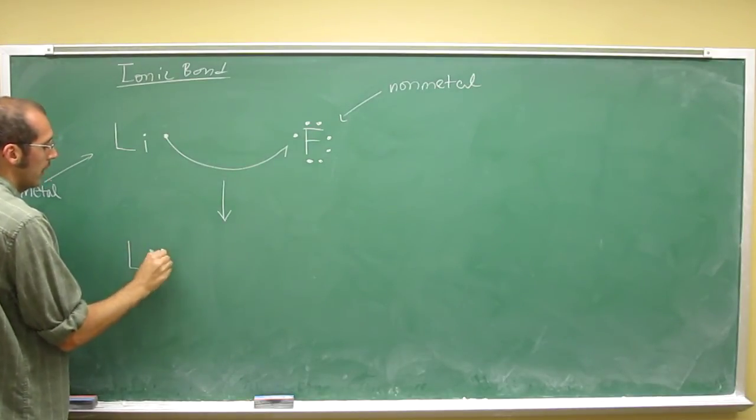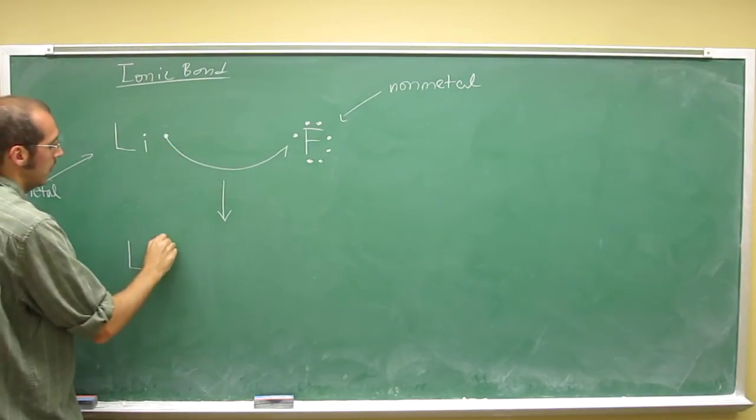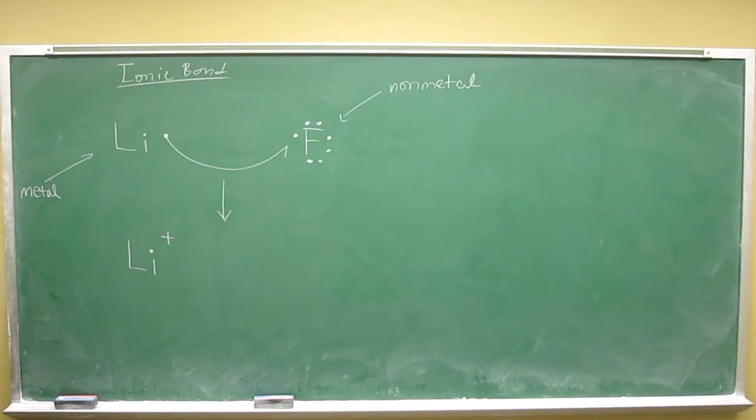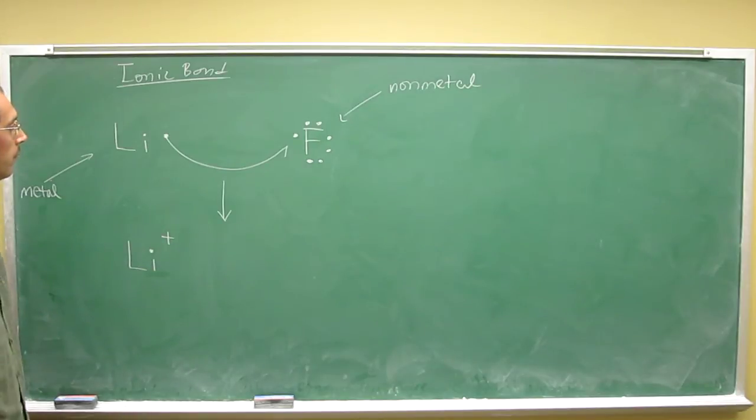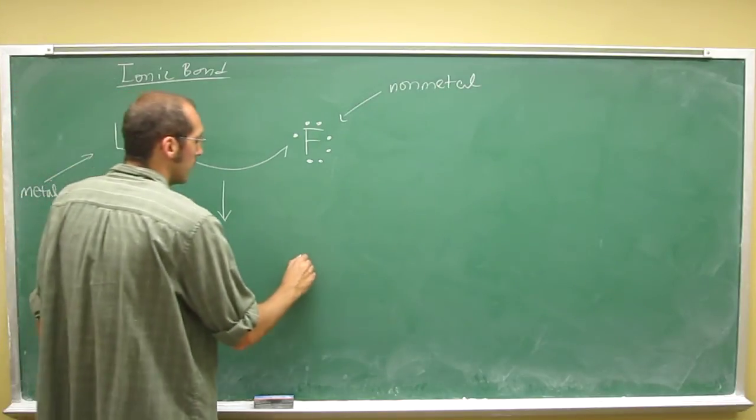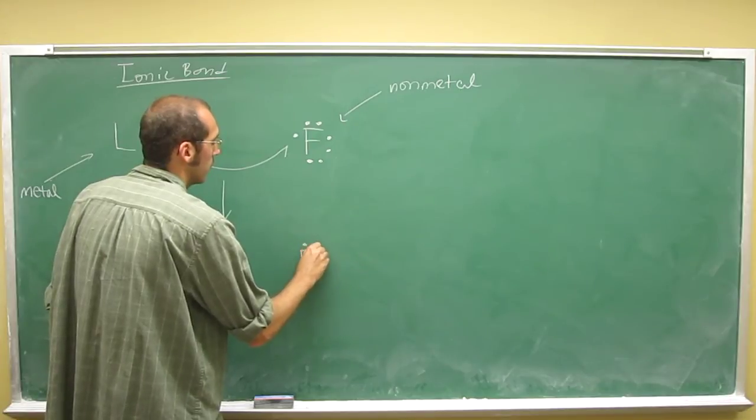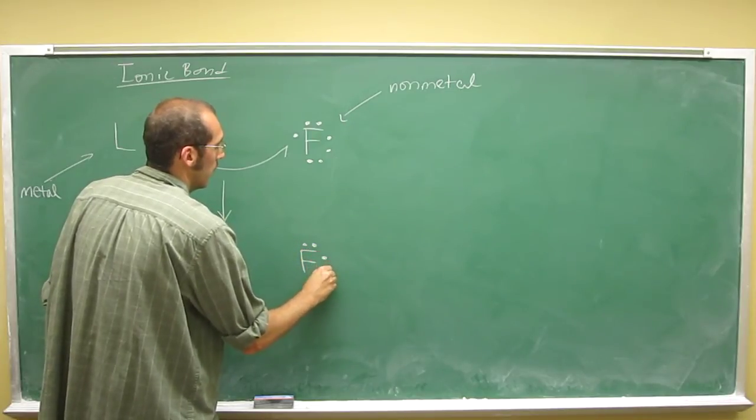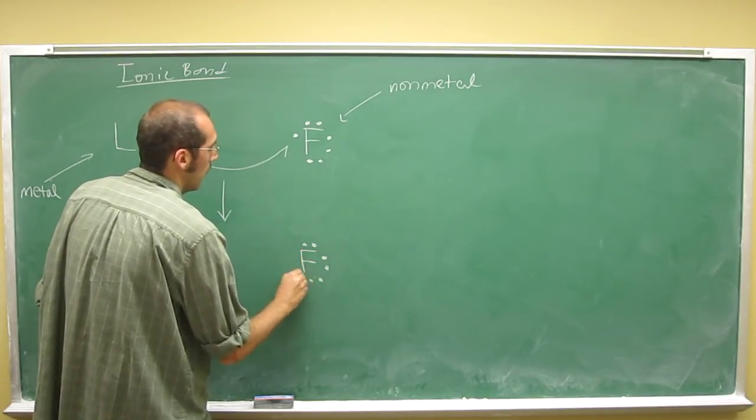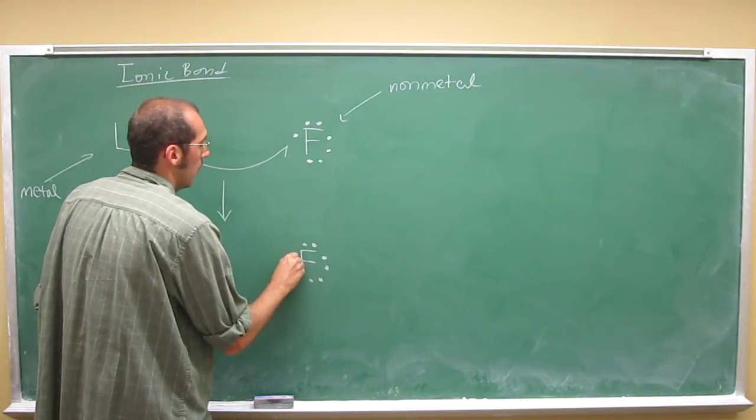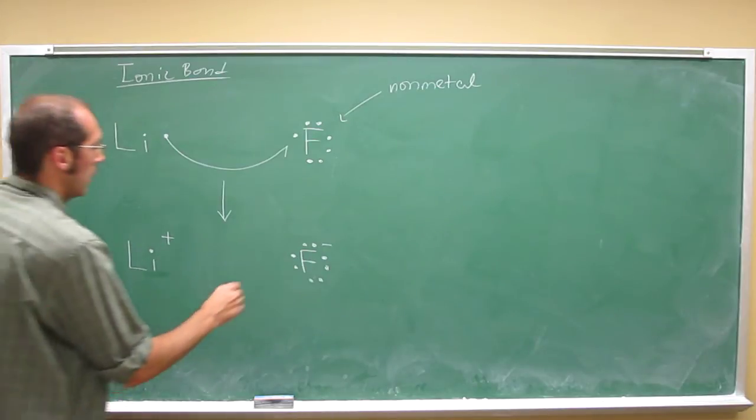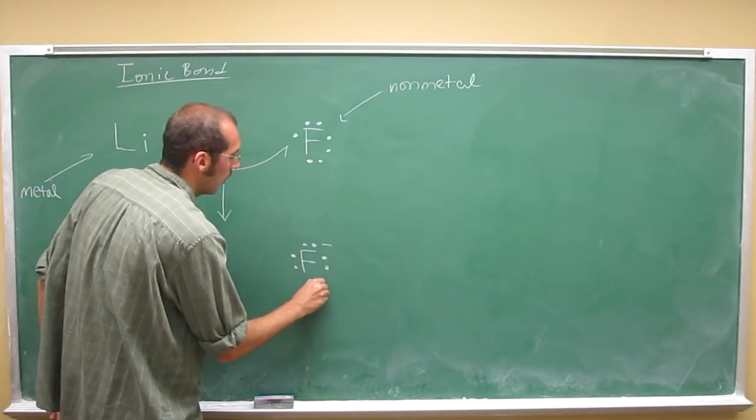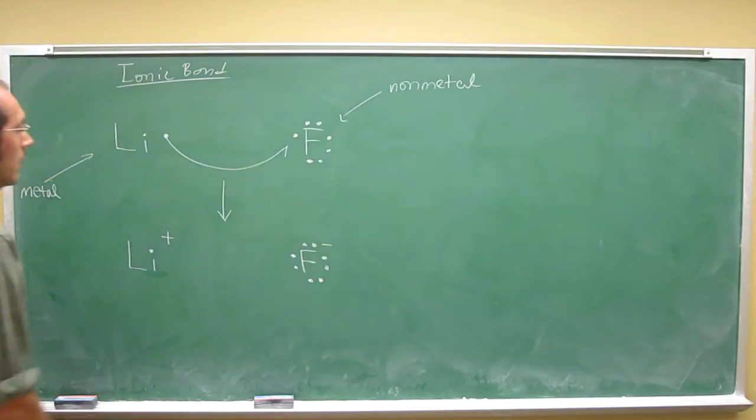One of them is a lithium without that electron, so it's going to be a positively charged lithium, or the lithium ion. And fluorine is going to have that electron added to it. So, if we wanted to draw its Lewis structure, it looks like the noble gas configuration, right? It's got a full octet of electrons.